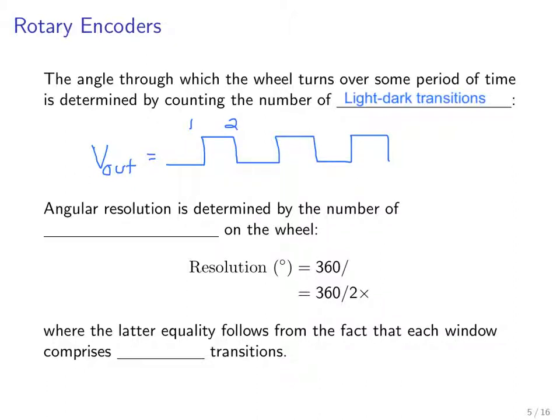We take this V-out waveform and count the number of edges. These counts go to a counter as a function of time. That's how we determine how fast it's going and how far it's gone. The angular resolution of that measurement is determined by the number of transitions on the wheel.